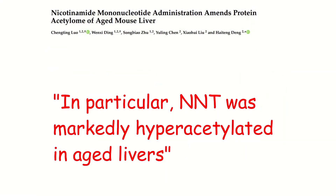This study looked at aged mice — specifically at the livers of aged mice. What they find is that a lot of the mitochondrial enzymes in the aged mice become acetylated. But in particular, the enzyme NNT was markedly hyperacetylated in aged livers. Remember, NNT is one of the main enzymes responsible for replacing NAD+ levels. You see this downward spiral: the first enzyme that becomes acetylated and turned off is the very one that replaces NAD+ levels.